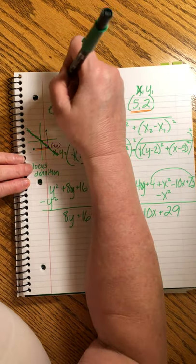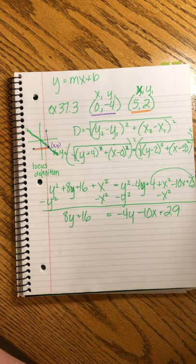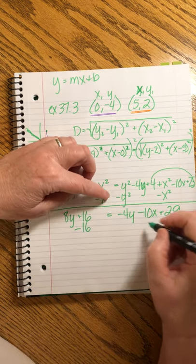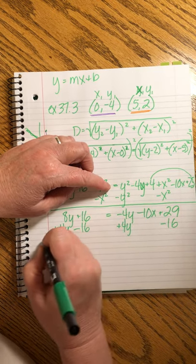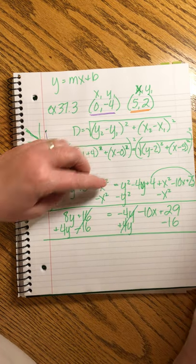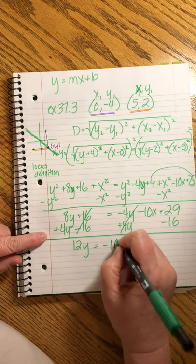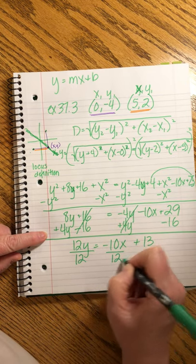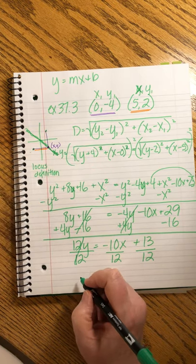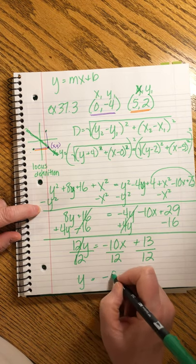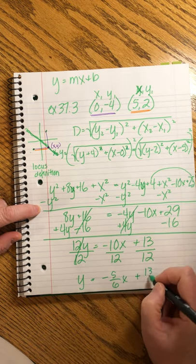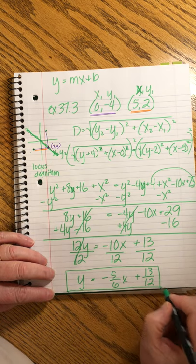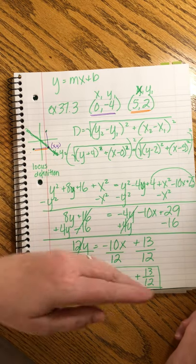In order to get y = mx + b, we'll push the y to the left and the x and the plain numbers to the right. So I'm going to subtract the 16 and I'm going to add the 4y. And I get 12y = -10x + 13. And then we divide everything by 12. And the equation of the line that goes through here is y = -5/6x + 13/12. These creepy fractions, they don't care. We don't care about those because we don't have to graph this.